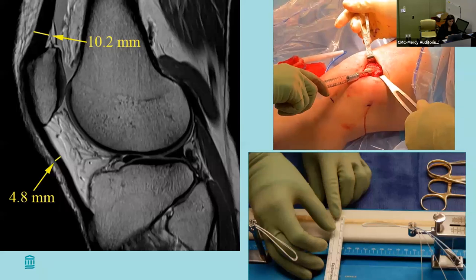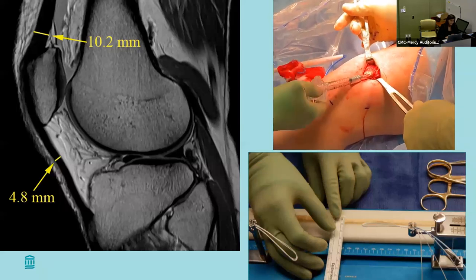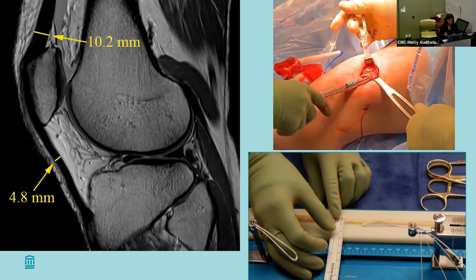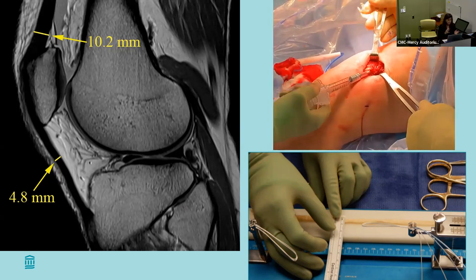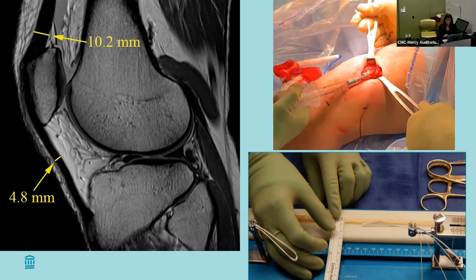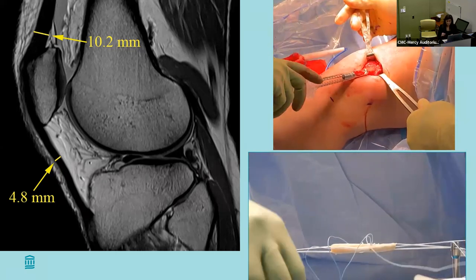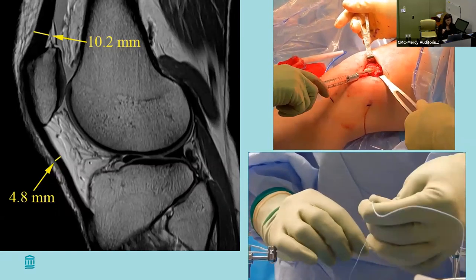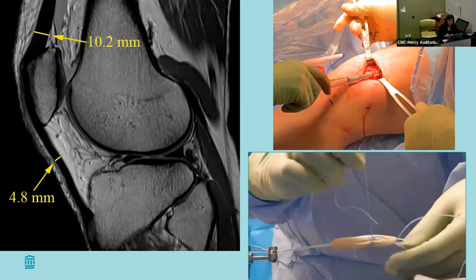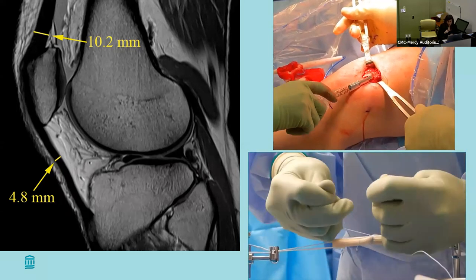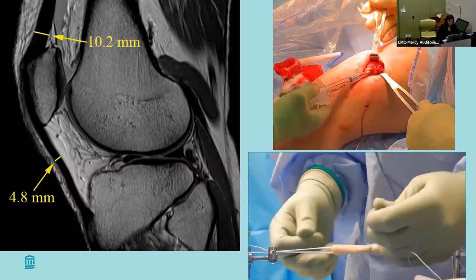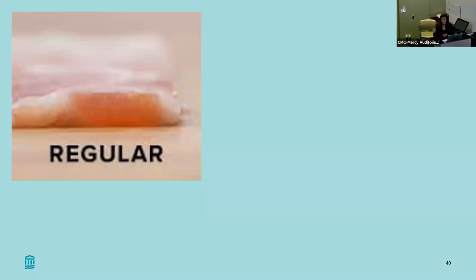Looking at this MRI, you can see the patellar tendon has a width of 4.8 millimeters, while the quad tendon is much more robust. The quad tendon, especially in a young female, is going to be more robust than the patellar tendon even if it's still on the smaller side. You can see harvesting a quad in the top right and prepping a quadrupled semitendinosus on the bottom.